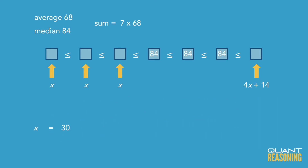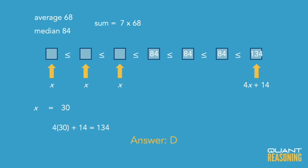The question isn't asking for x — it's asking for 4x plus 14. So 4 times 30 is 120, plus 14 is 134. That's why the correct answer is D.